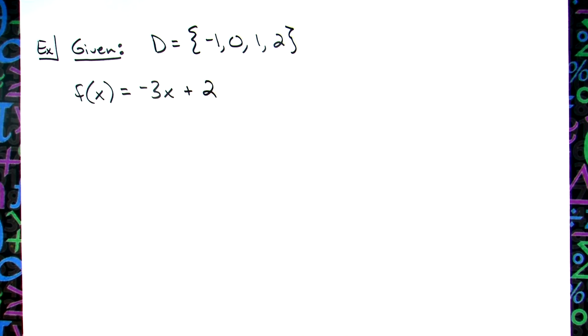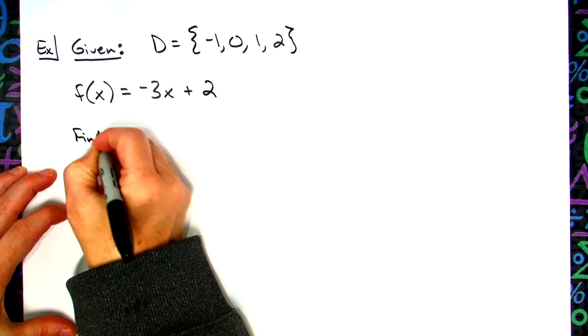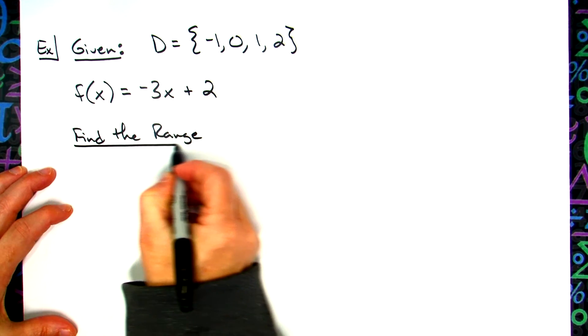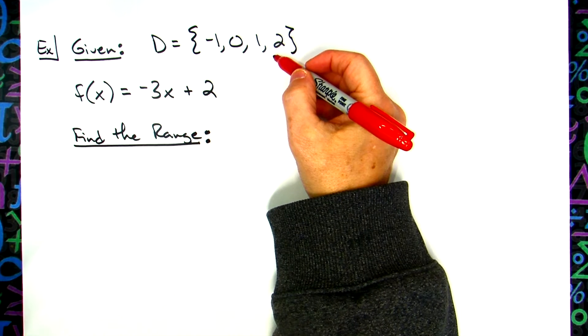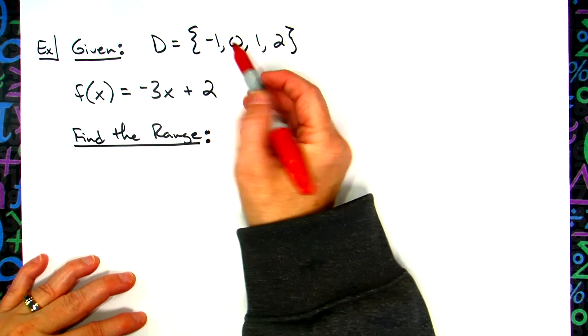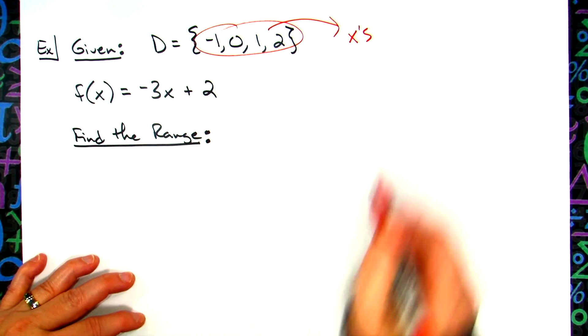So they've given you your domain, they've given you a function, and now they're going to ask you to find the range. Now, what is the domain again? The domain is the x's. So these are my x's or my x coordinates.